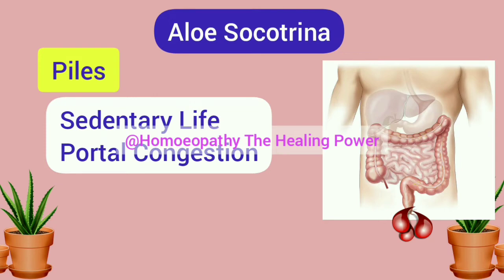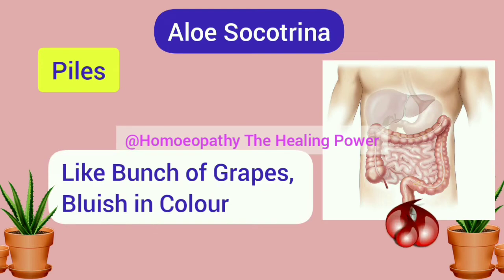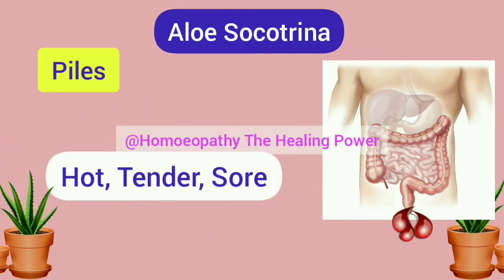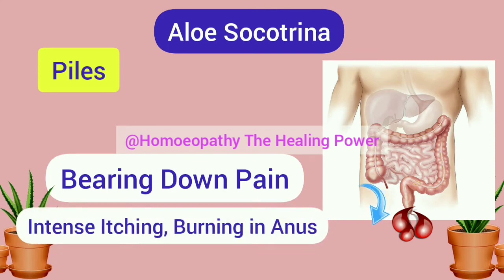In Aloes there are bleeding piles, and these bleeding piles have a very typical appearance — like a bunch of grapes — and are bluish in color. This is not just an exaggeration; it is clinically verified. Patients themselves report that the structure of their piles looks just like a bunch of grapes. These piles are very hot, tender, and sore, with a constant bearing-down pain in the rectum.